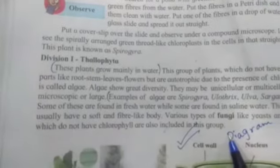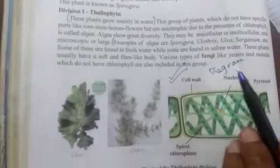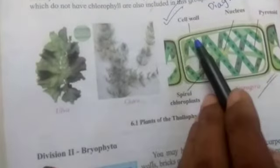Fungi like yeast and molds, which do not have chlorophyll, are also included in this group. Although algae are autotrophic, there are varieties where chlorophyll is not present — those come under fungi. Looking at the examples: Ulva, Spirogyra — you can see that cell wall is present, nucleus is present, and spiral chloroplast is present inside. This was about Thallophyta. Now the second category is Bryophyta.